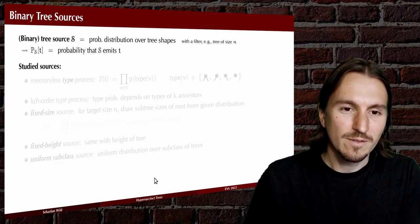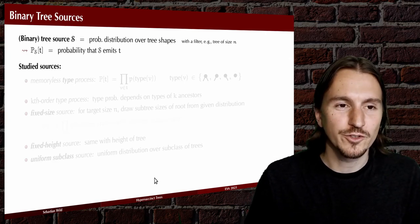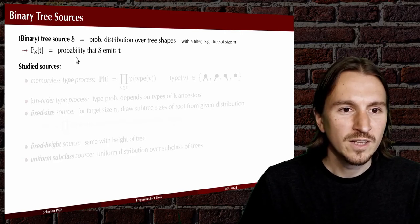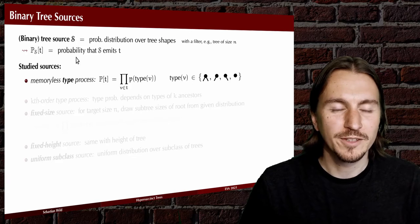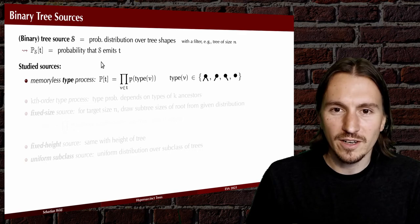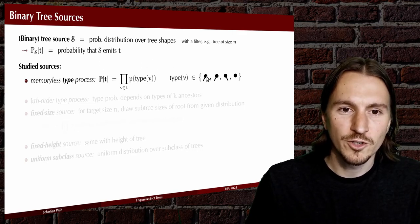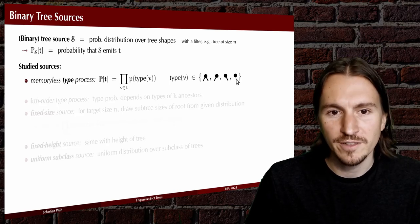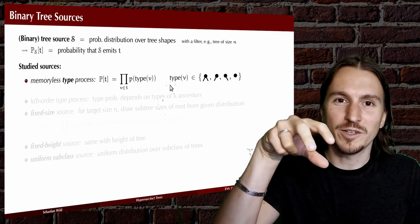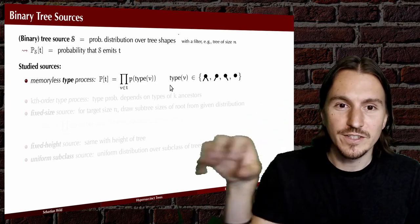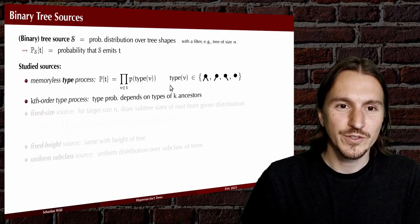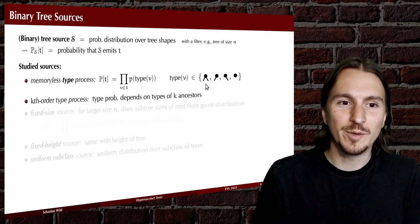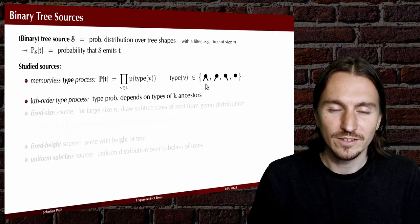To apply the same piece of theory to binary trees instead of text, we need a notion of source for binary trees, which essentially gives us a probability distribution over tree shapes. We study a list of different such distributions — they all essentially generate a tree step by step. We start with one node, and in the first example — the memoryless type process — there's a particular probability for that node to have two children, only a left, only a right, or be a leaf. We draw its type and then recurse on its left and right subtrees if they exist.